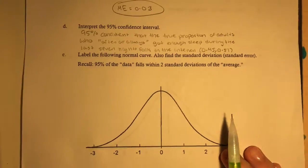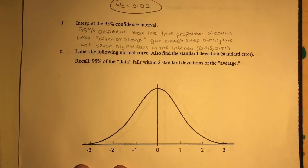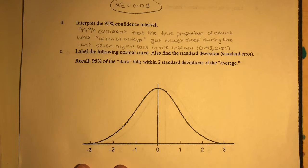Now part E is the last part. Label the following normal curve. Also find the standard deviation. Recall that 95% of the data falls within two standard deviations of the average. Let's do it.